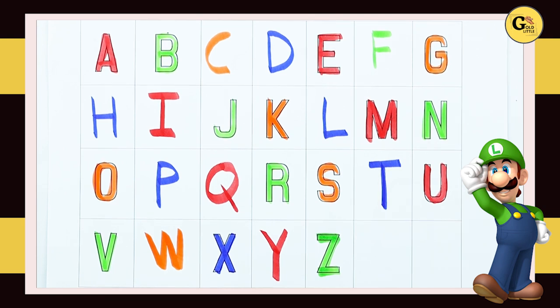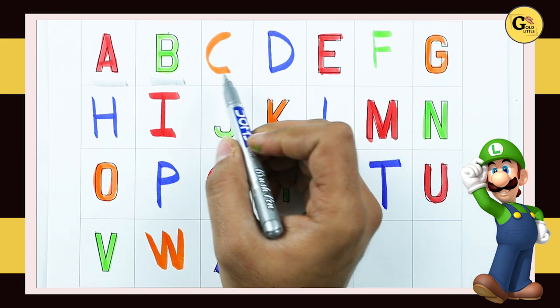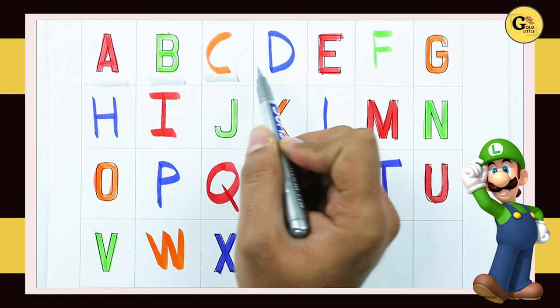Hello friends, today we learn alphabet capital alphabets. A, A for apple. B, B for ball. C, C for cat.